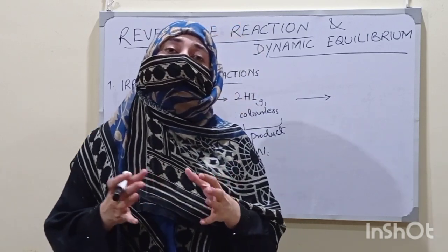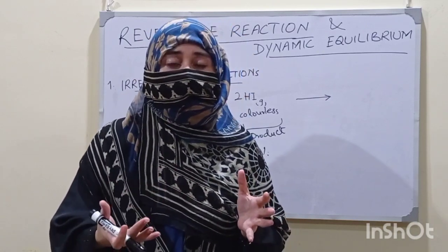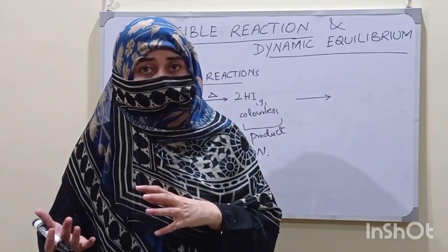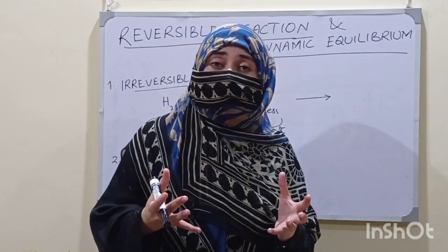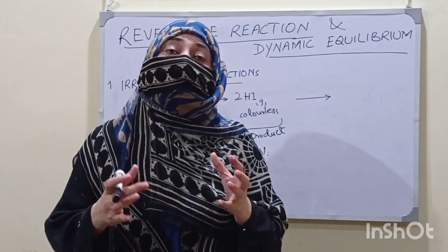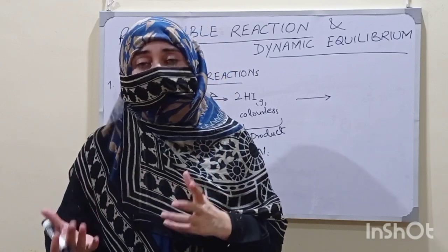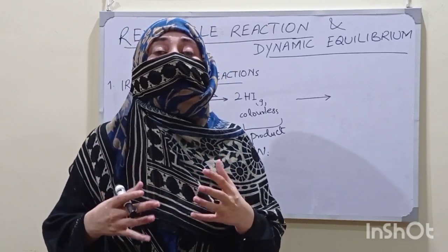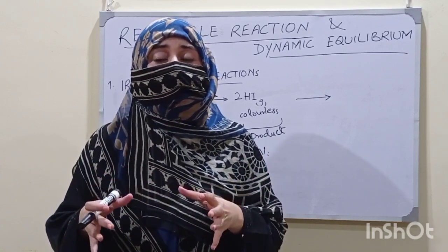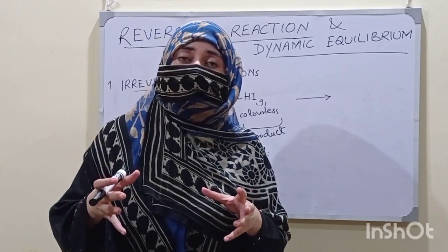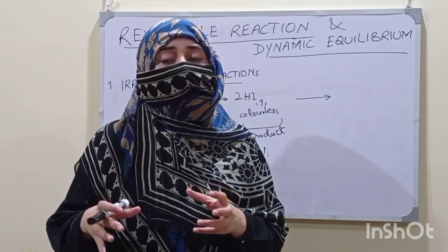In reversible reactions, reactants in the beginning are changed into products, but after some time products are decomposed back into the reactants, and it remains like this. The final result is that we can have either of the components in its specific concentration in the reaction mixture. All reactants and products are in a specific concentration in the reaction mixture.